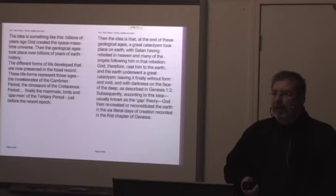God therefore cast him to the earth and the earth underwent a great cataclysm, leaving it finally without form and void and with darkness on the face of the deep as described in Genesis 1:2. Subsequently, according to this idea, usually known as the gap theory, God then recreated or reconstituted the earth in the six literal days of creation recorded in the first chapter of Genesis. Well, how many of you agree with his portrayal of the gap theory so far? Not a lot, right?